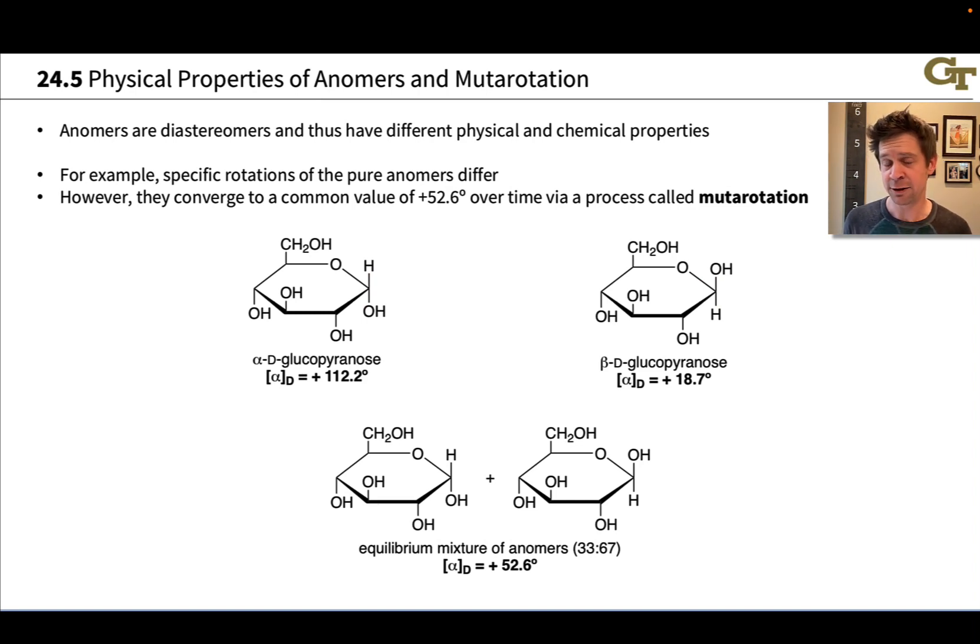Because these are diastereomers, they differ in their physical properties. For example, the specific rotations of the pure anomers are different. Recall that specific rotation is an intensive measure of the extent to which a compound rotates the plane of polarized light—it's an angle indicating rotation under a standard set of conditions. For alpha-D-glucopyranose, this value is positive 112.2 degrees, and for beta-D-glucopyranose, the value is positive 18.7 degrees. So, unsurprisingly, for these diastereomers, we've got different specific rotations.